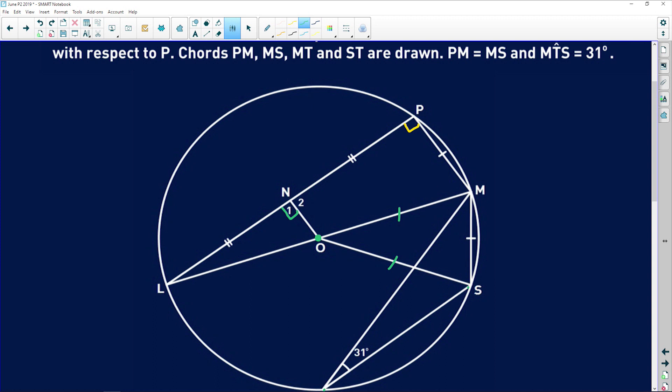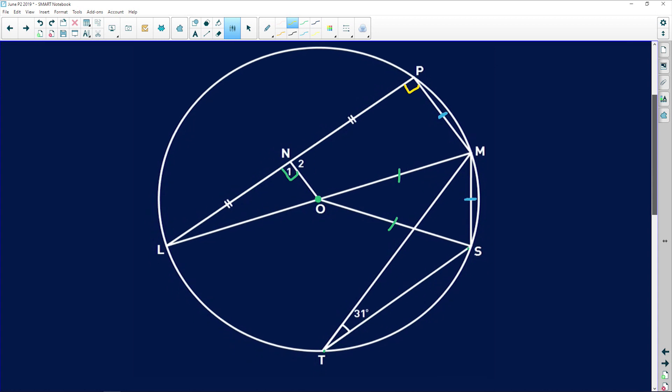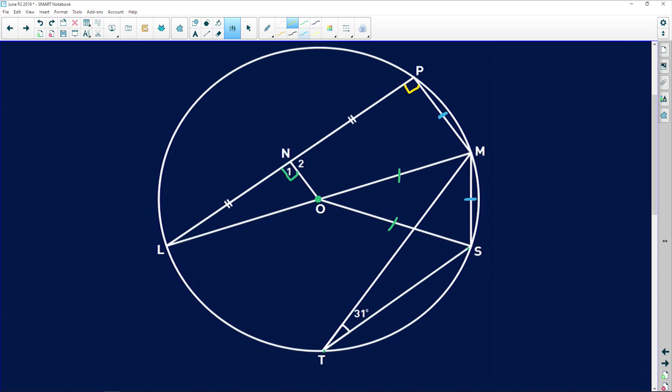Lastly, it says that PM is equal to MS. These two lines are equal to each other. And angle MTS is 31 degrees. So guys, before you even start with your questions, try and establish what information you have in your circle. So if we look here, this chord MS obviously subtends this angle of 31 degrees. But it also subtends an angle at the center.